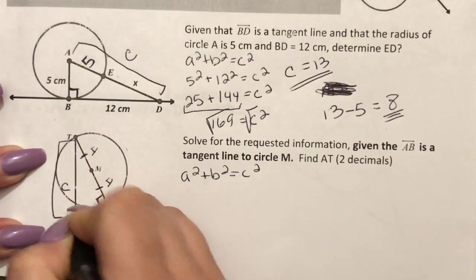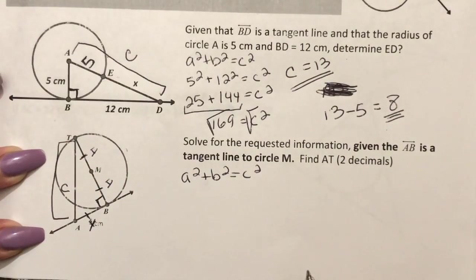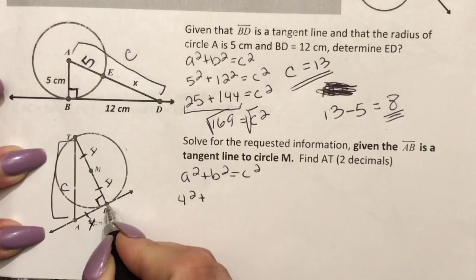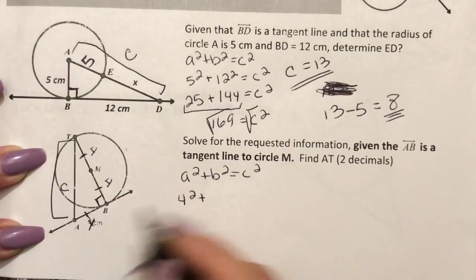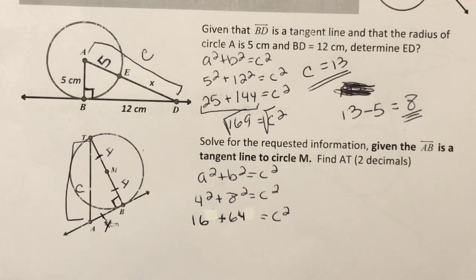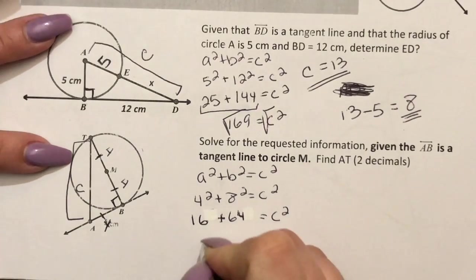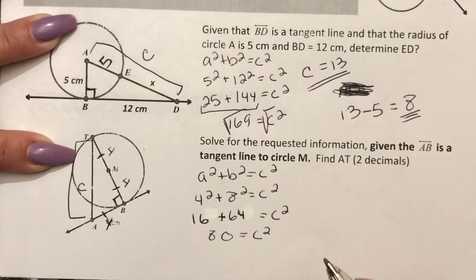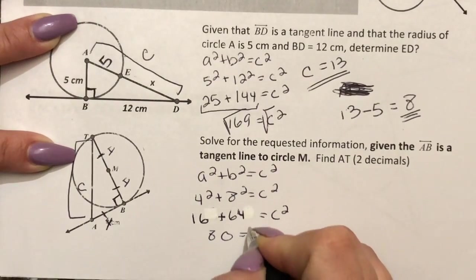In this problem I'm also solving for the hypotenuse so I'm going to plug in A and B as I know it. Since this side is the diameter I know it's going to be 8 squared. After you square the 4 and square the 8 you get 16 plus 64 which is going to equal 80, and the last step to get C by itself would be to take the square root.